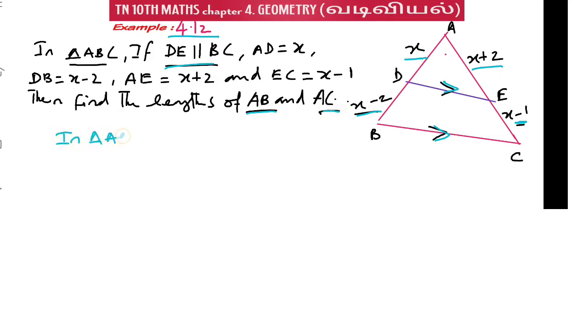In triangle ABC, by Thales theorem, the basic proportionality theorem, AD by DB equal to AE by EC.